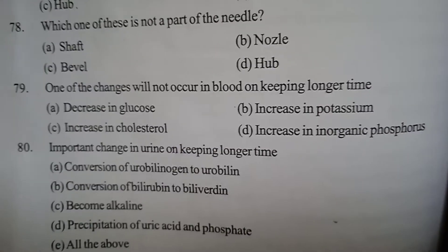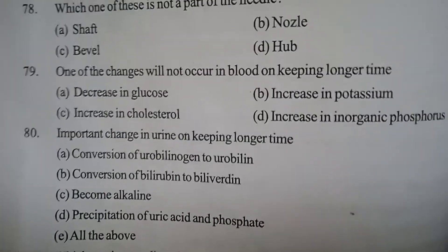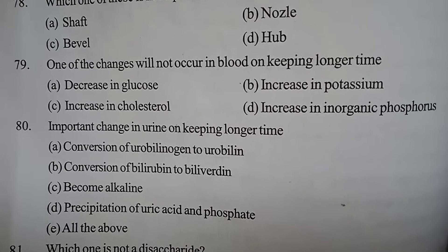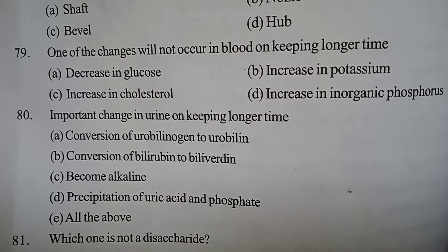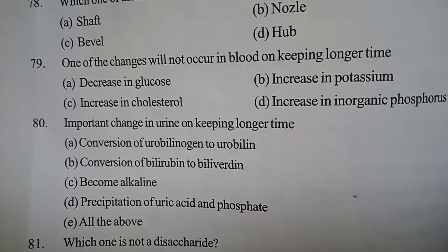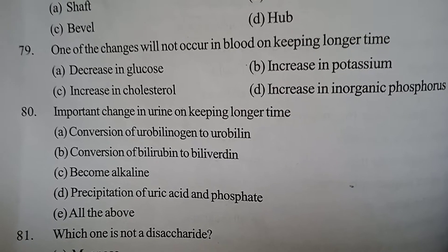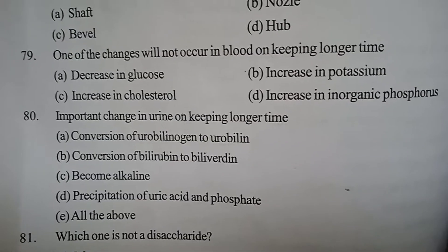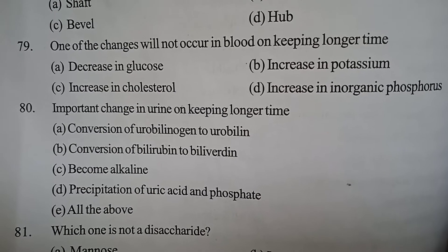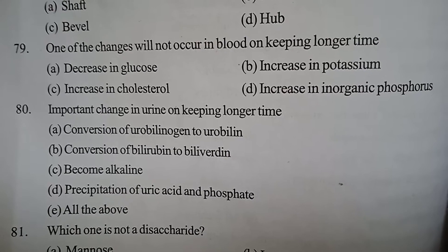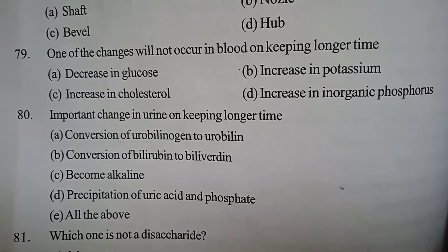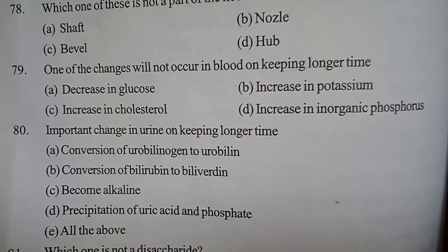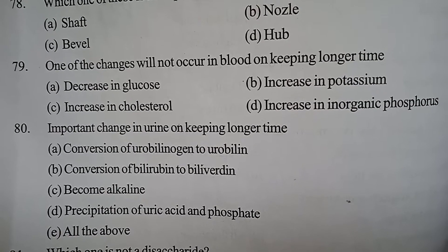Next question: Important changes in urine on keeping for a longer time. Option A: conversion of urobilinogen to urobilin. Option B: conversion of bilirubin to biliverdin. Option C: becomes alkaline. Option D: precipitation of uric acid and phosphate. Option E: all of the above. Correct answer: Option E, all of the above.